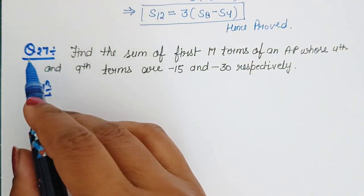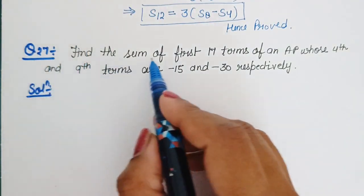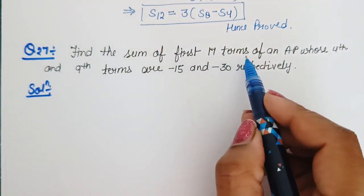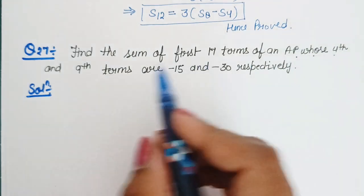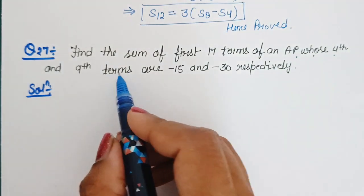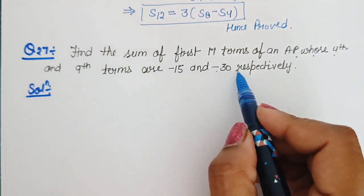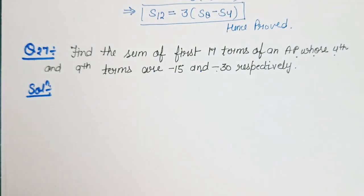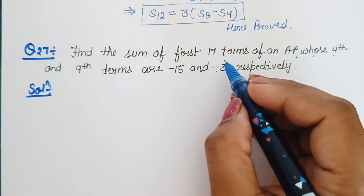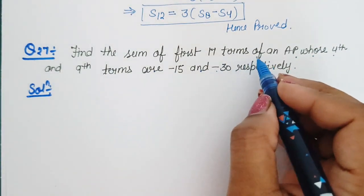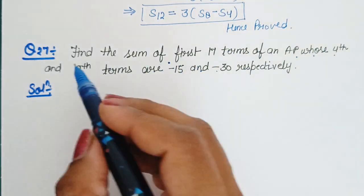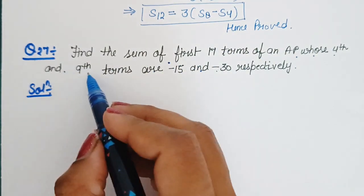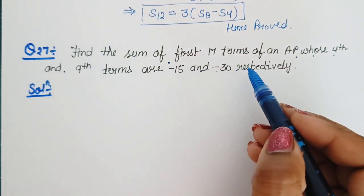Now Question number 27: Find the sum of first 17 terms of an AP whose 4th and 9th terms are minus 15 and minus 30 respectively. Humein find karna hai 17 terms ka sum. Humein 4th term ki value given hai and 9th term ki value given hai.